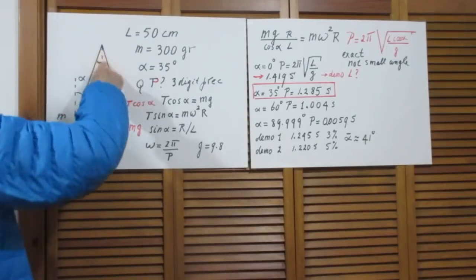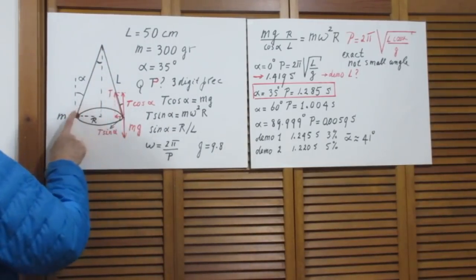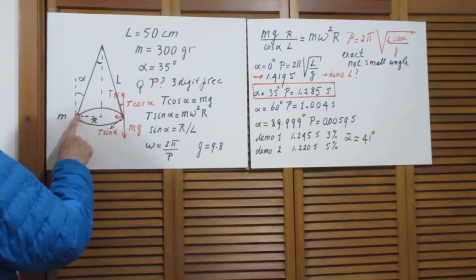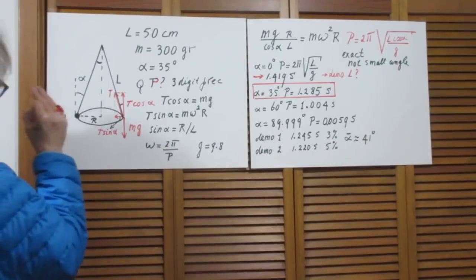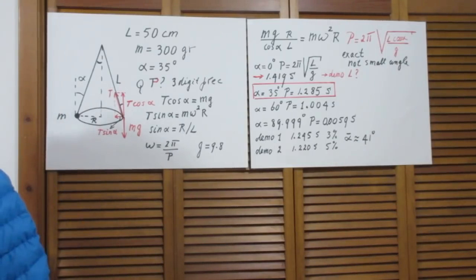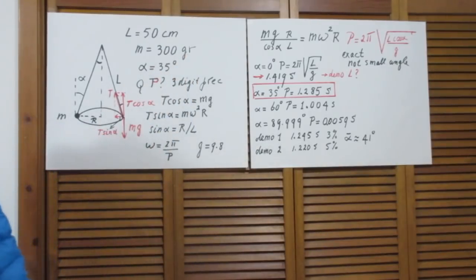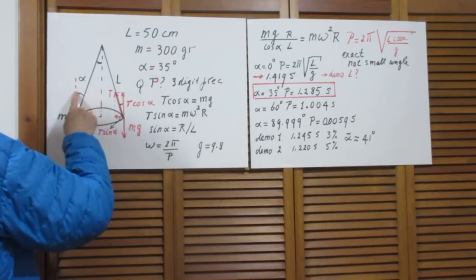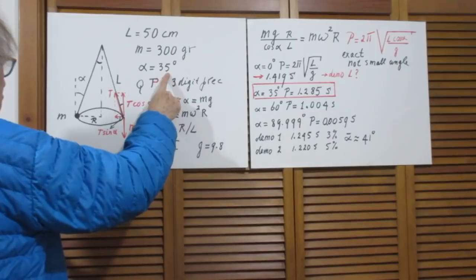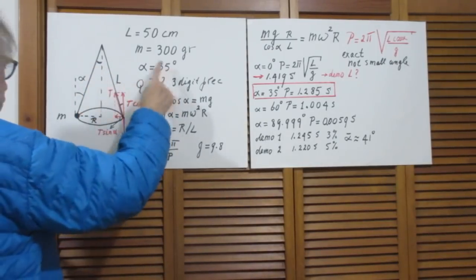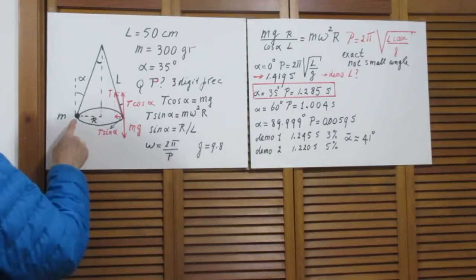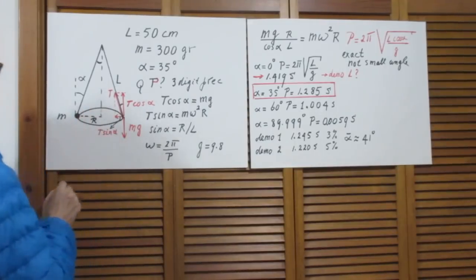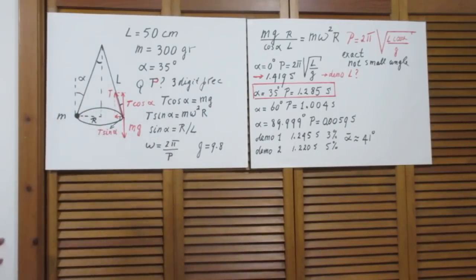So here is that pendulum, length L. At the end is a mass M, which we will assume can be considered to be a point. L is 50 centimeters. The mass was 300 grams. And my question was: if this angle alpha is 35 degrees, so this angle is also 35 degrees, so the top angle is 70 degrees, how long does it take for the mass to go around once? And we call that the period — how much time it takes for one revolution.